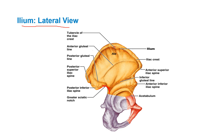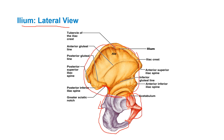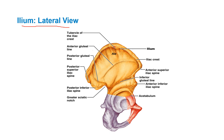The greater sciatic notch is a very important landmark because the sciatic nerve passes through there. If someone is going to do a gluteal injection, you have to be careful not to inject into the sciatic nerve — so you need to know your landmarks. The ischial spine is right here. The blue part of the bone is the ischium, the red bone is the pubic bone, and the top bone is the ilium. This is the sacral ala.